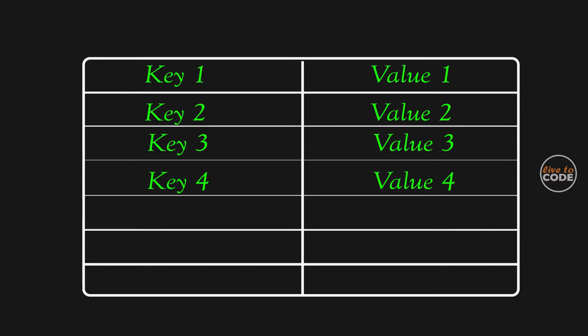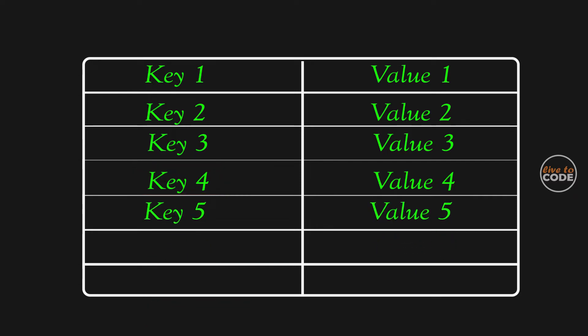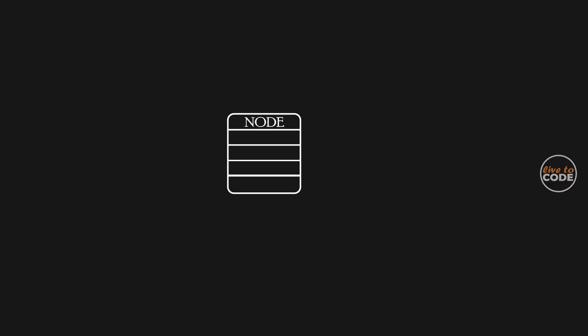HashMap internally maintains a table which contains keys and values. When we call the put function with a new key-value pair, the map checks whether the given key exists or not. If it does not exist, it inserts into a new position. If the key already exists, it updates the existing value. HashMap stores each key-value pair in the node object form.